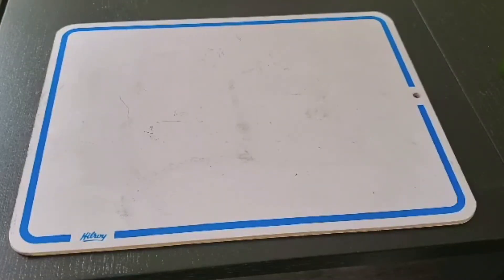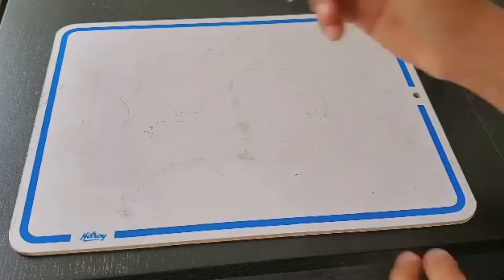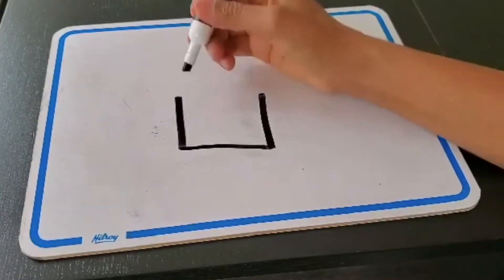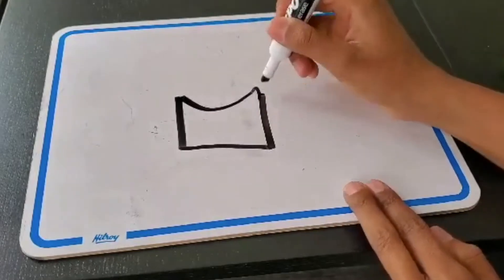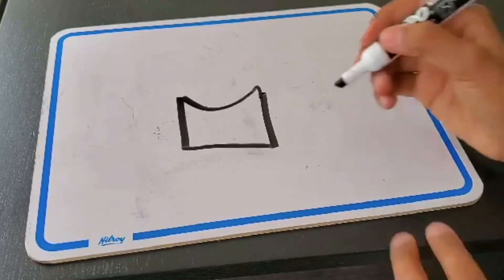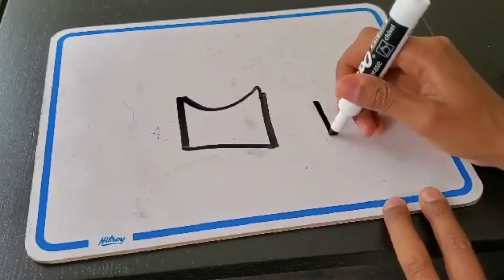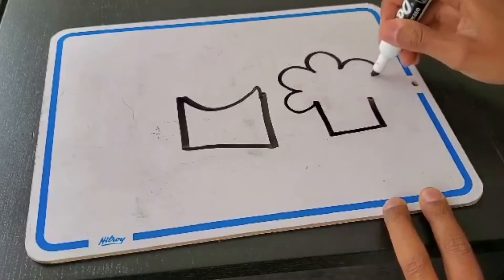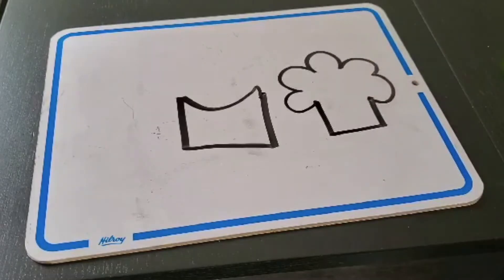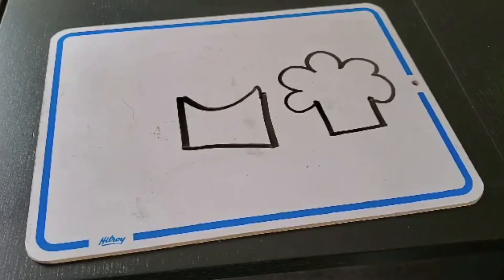Some objects might have a curved side and a straight side. For example, if all of the lines here are straight but I add something curved in, now there's a curved line in there. Another example has straight lines here but curved lines up top. So some objects might just have straight lines, some might have just curved lines, and others might have both a curved side and a straight side.